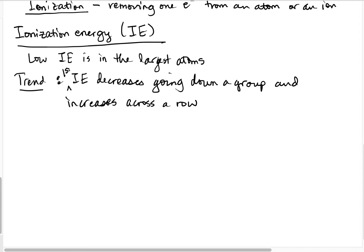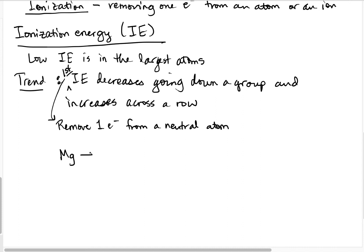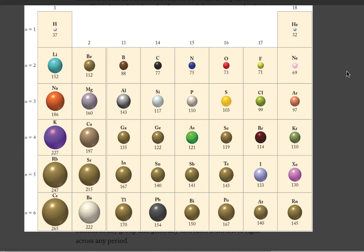This specifically is the first ionization energy, which is to remove one electron from a neutral atom — for example, going from magnesium to Mg⁺, or from carbon to C⁺. There is a first ionization energy associated with each of these. Which one would you guess is larger? Let's look at atomic size: carbon is smaller than magnesium.